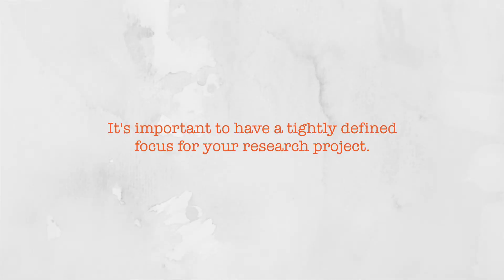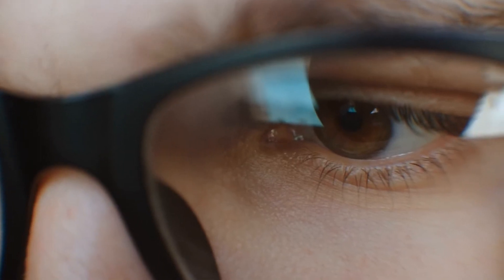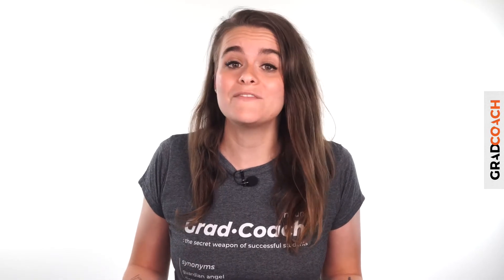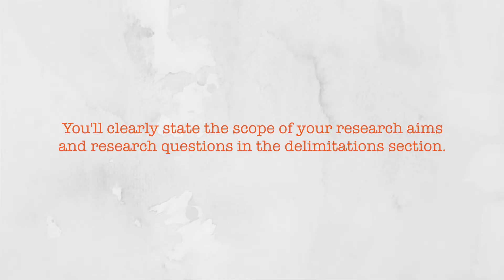As we've spoken about many times before, it's important to have a tight, narrow focus for your research so that you can dive deeply into your topic, apply your energy to one specific area, and develop meaningful insights. If you have an overly broad scope or unfocused topic, your research will often pull in multiple, even opposing directions, and you'll just end up with a muddy mess of findings. So, the delimitations section is where you'll clearly state what your research aims and research questions will focus on, and just as importantly, what they will exclude.